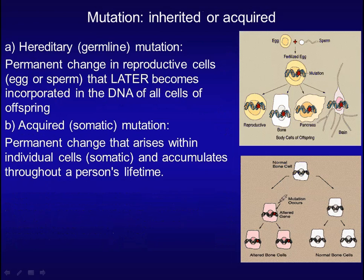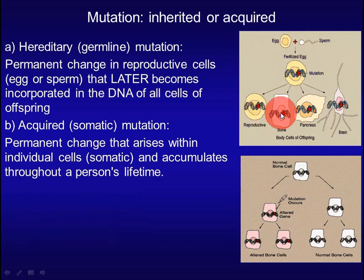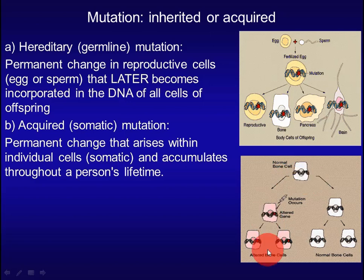A mutation can be inherited or acquired. A hereditary mutation is a permanent change in reproductive cells — for example, a mutation that occurs in an egg and later becomes incorporated into the DNA of all cells of the offspring. An acquired mutation is a permanent change that arises within individual somatic cells — for example, a mutation that occurs in a somatic cell and accumulates throughout a person's lifetime.